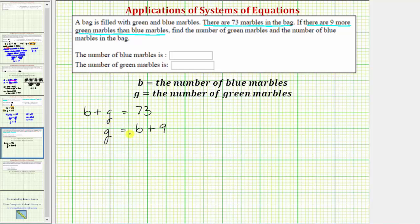And now if we solve this system of equations, we can determine the number of blue and green marbles in the bag. Because the second equation is already solved for g, we'll solve the system of equations using the method of substitution.